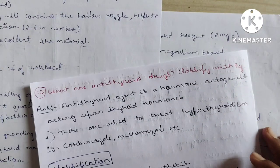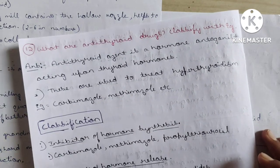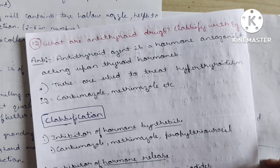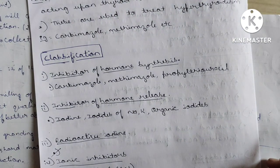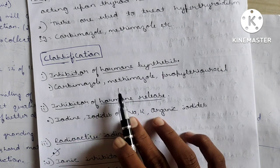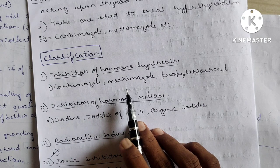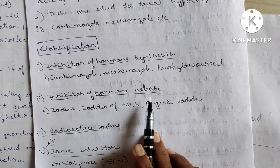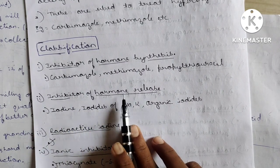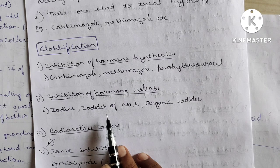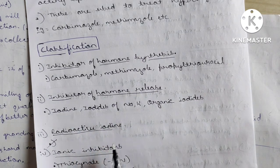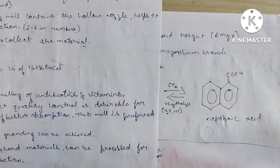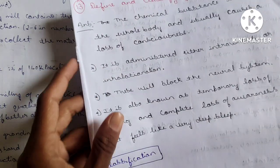Question 12: What are anti-thyroid drugs? Classify them. Anti-thyroid agents are hormone antagonists acting on thyroid hormones, used to treat hyperthyroidism. Classification: Inhibitors of hormone synthesis — carbimazole, methimazole, propylthiouracil. Inhibitors of hormone release — iodine, iodides of sodium and potassium, organic iodides, radioactive iodine. Ionic inhibitors — thiocyanate, perchlorates, nitrates.